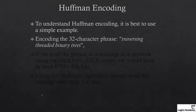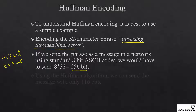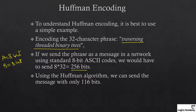To understand Huffman coding, let's use a simple example: encode the 32-character phrase 'traversing threaded binary trees.' If we send this phrase as a message in a network using standard 8-bit ASCII code, we would have to send 8 × 32 = 256 bits, since every ASCII character is 8 bits. Using the Huffman algorithm, we can send the message with only 116 bits — more than half of the bits are reduced.